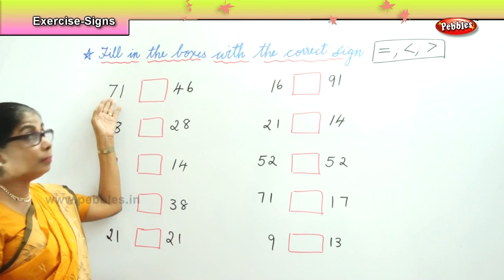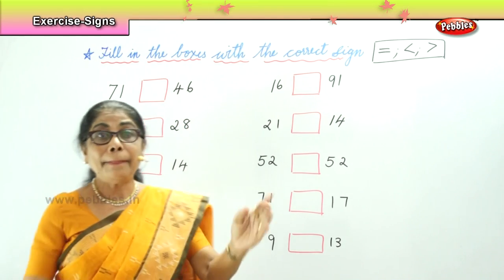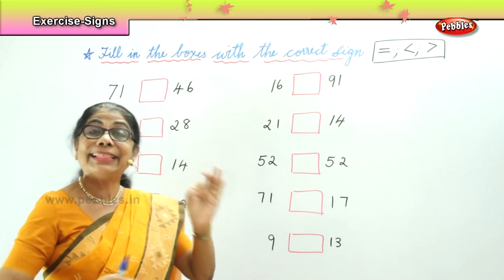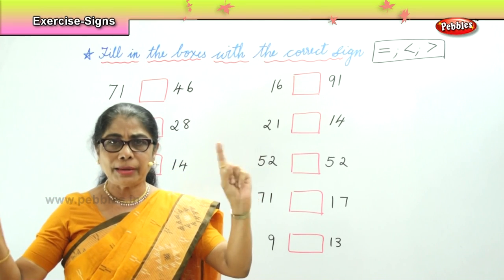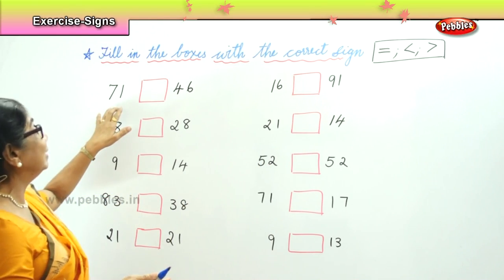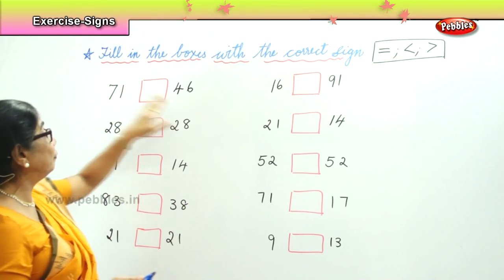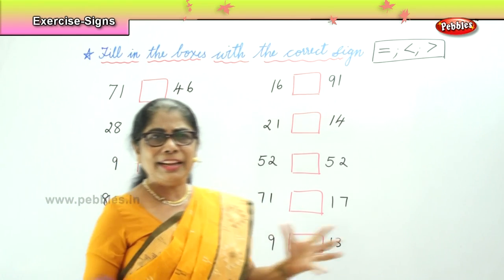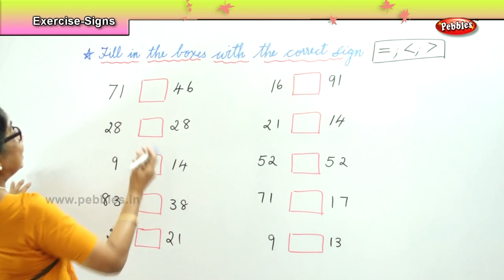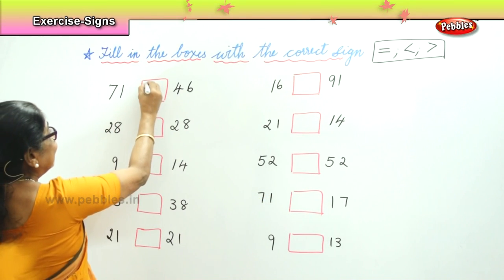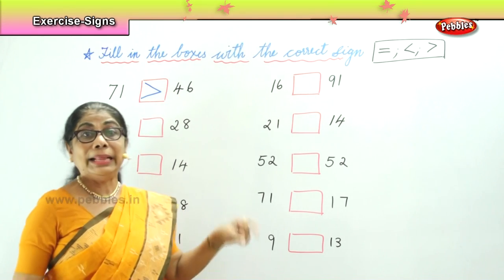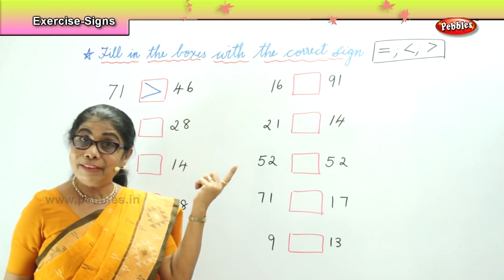We have 71 and we have 46. Remember, the bird's beak always points towards the less number — the smaller number — when we compare two numbers, and that's how we detect greater or less. Here we have 71 and 46. Of the two, which is the big number? Definitely it is 71, bigger than 46. So the sign here — remember, the bird's beak always points towards the smaller number — so 71 is greater than 46.